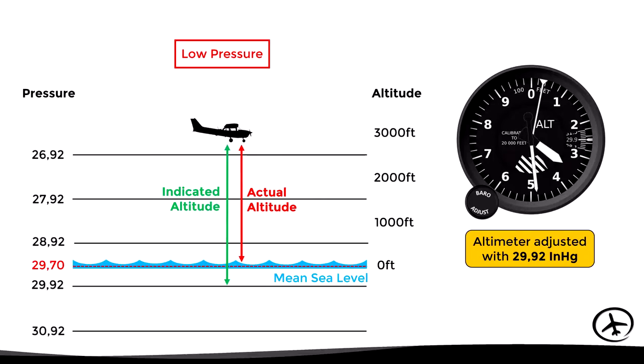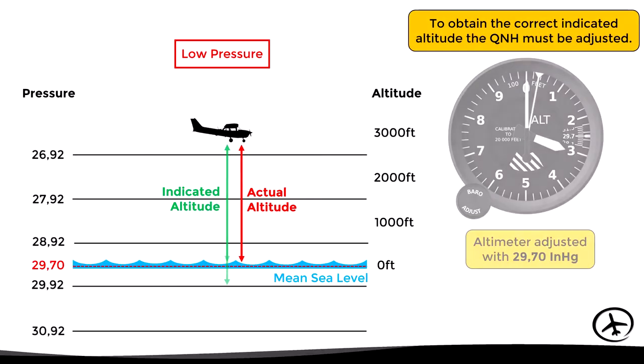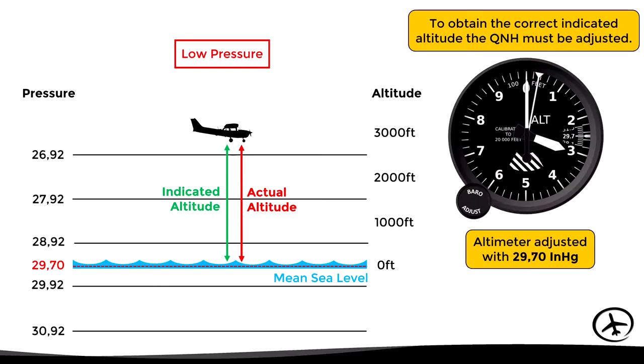So if our altimeter is still adjusted with the default setting, the indicated altitude will be higher than the actual altitude. In order to obtain the correct altitude reading, we will have to adjust the current QNH of 29.70 as the new barometric reference. With this, it is clear that the indicated altitude is obtained when the current QNH is adjusted on the altimeter.